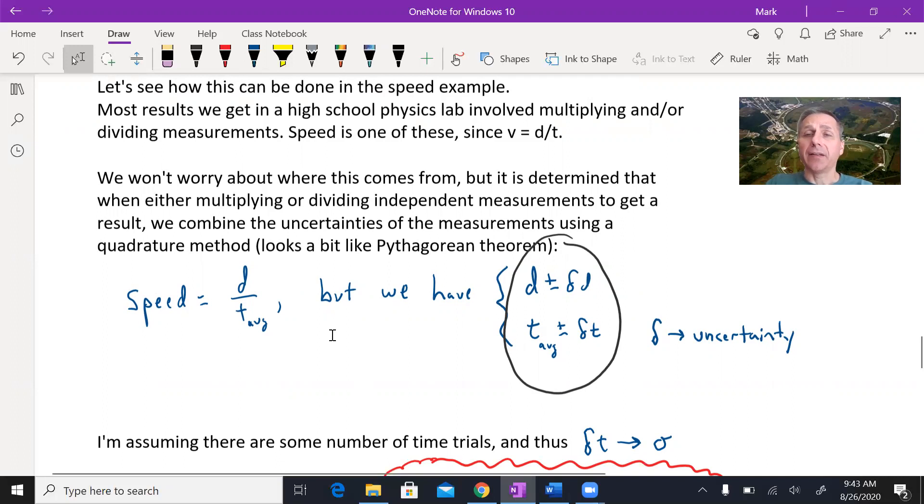If it's a huge uncertainty, then if you have a huge range of possible speeds, you really don't have a clue as to what the real speed is. So you have to have a measure. You have to quantify the uncertainty in that result.